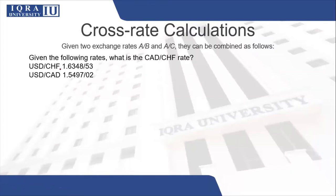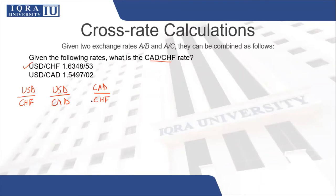What can really help you in this calculation is to write this in the form of a fraction. So write it as USD/CHF for the first rate and USD/CAD for the second rate. The rate you require is CAD/CHF. You need CAD in the numerator and CHF in the denominator. CHF is already in the denominator, but CAD is in the denominator as well, so you need to convert this rate into its reciprocal.